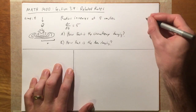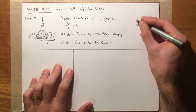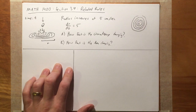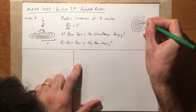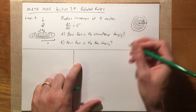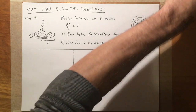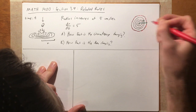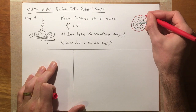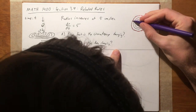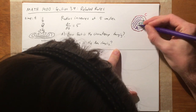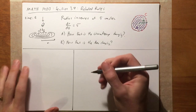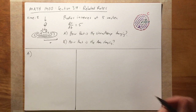We have circular ripples coming out from a central point. The radius r is the distance from the center to the edge. The circumference C is the distance measured around the outside of the circle. The area A is the region on the inside of the circle. So we have three related variables: R, C, and A.